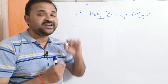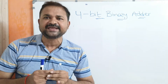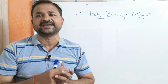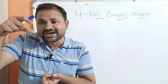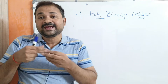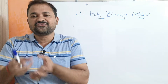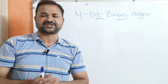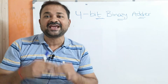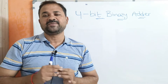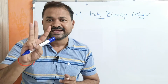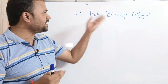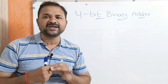With a binary adder, we perform addition on two binary numbers. When we add 2 bits, we may get some carry, and we have to forward that carry to the previous bit. That's why we use full adders — because we need to perform addition on 3 bits. Let's see the diagram for a 4-bit full adder.